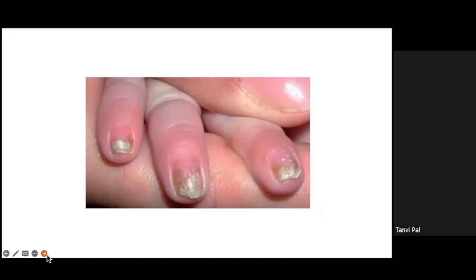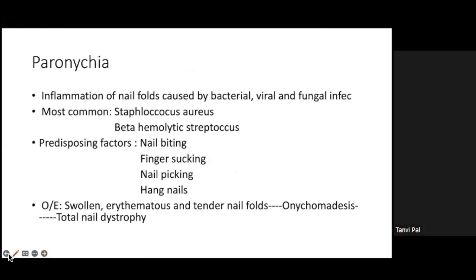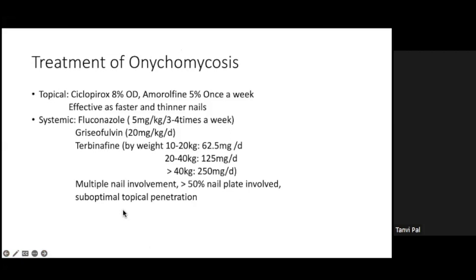Treatment of onychomycosis: topical treatment in children is effective because nails are thinner, allowing better penetration. Ciclopirox 8% once daily or amorolfine 5% once weekly can be used — around two to three months for fingernails and up to six months for toenails. Systemically, if there is multiple nail involvement, more than 50% nail plate involvement, or suboptimal topical penetration, oral fluconazole 5 mg/kg three to four times a week, griseofulvin 20 mg/kg per day, or terbinafine in various doses can be given.